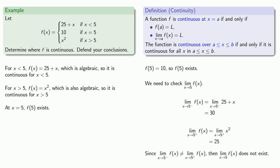Since the limit as x approaches 5 from below is not equal to the limit as x approaches 5 from above, then the limit as x approaches 5 does not exist. So this means that f of x is not continuous at x equals 5.